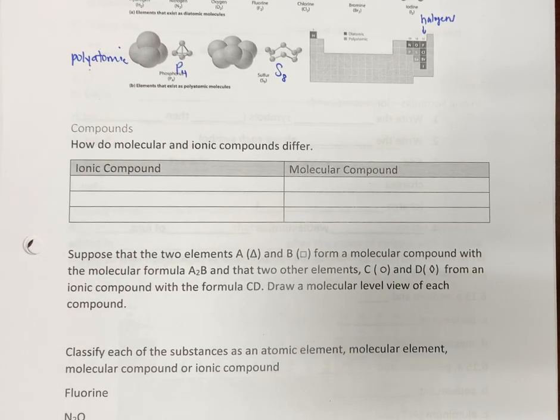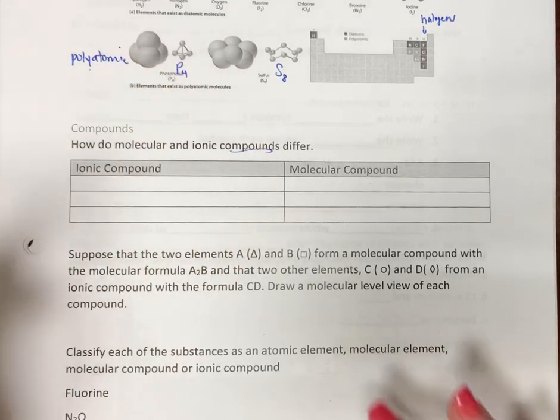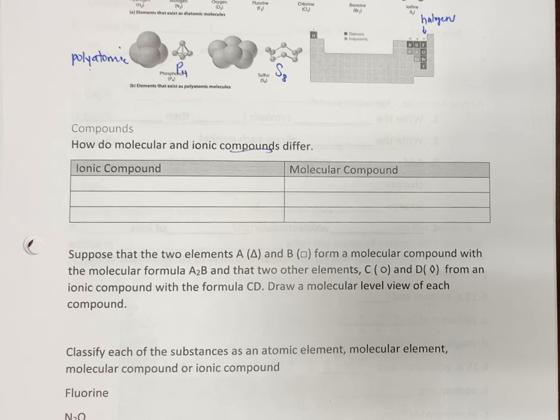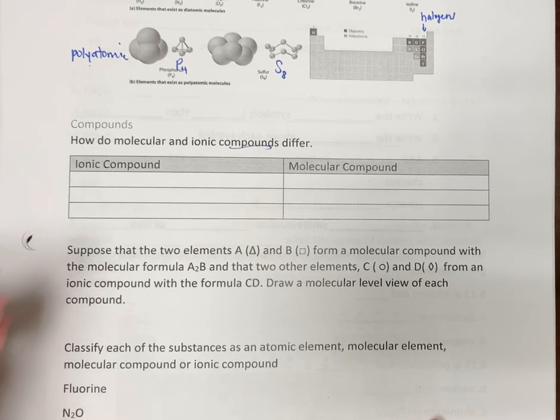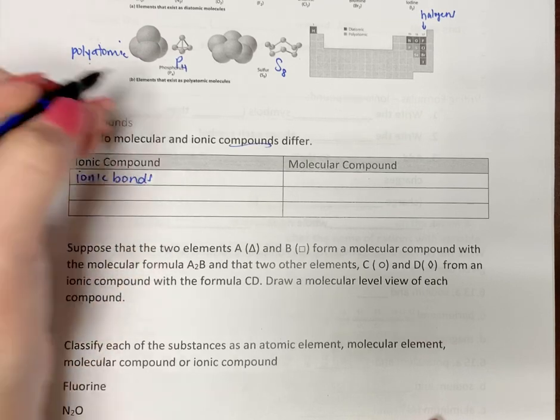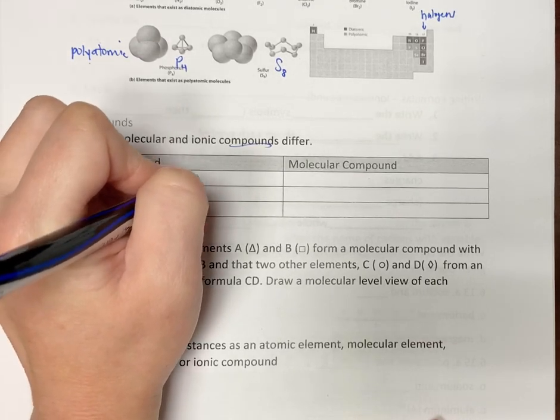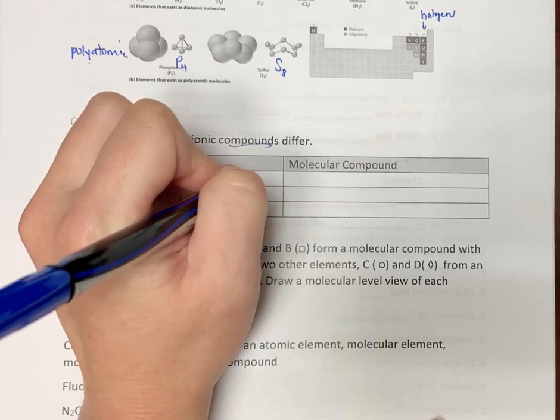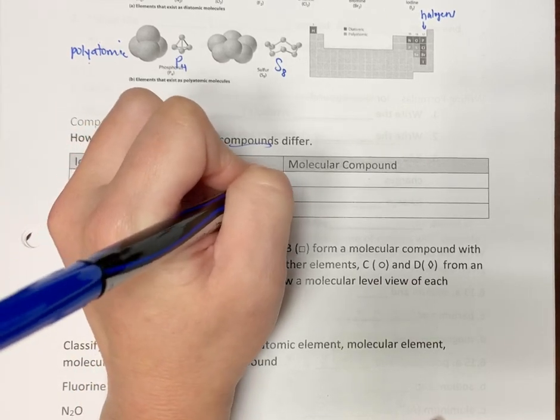Now, those were atomic and molecular elements. Let's talk about our different types of compounds. In an ionic compound, you have ionic bonds. And those are between two charged ions.